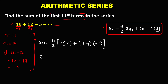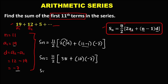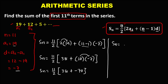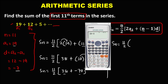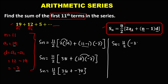Then to simplify: the sum equals 11 over 2, then 2 times 19 is 38, then plus 11 minus 1 which is 10, times negative 7. So we have 38 plus 10 times negative 7, that's negative 70. So we have 38 plus negative 70, which equals negative 32.